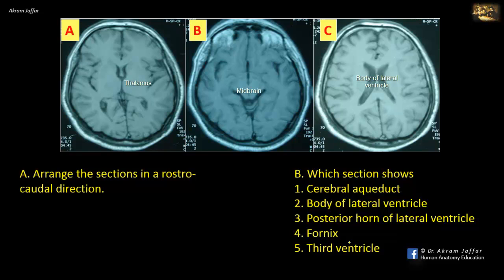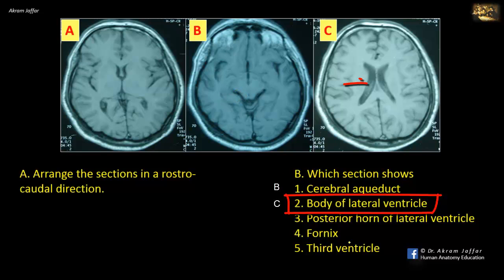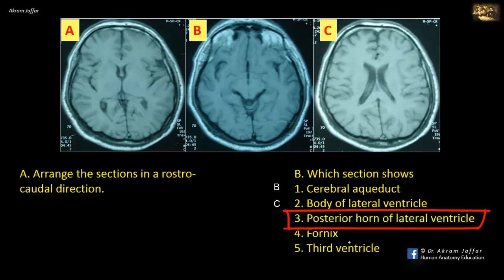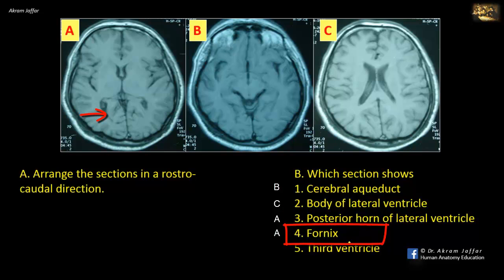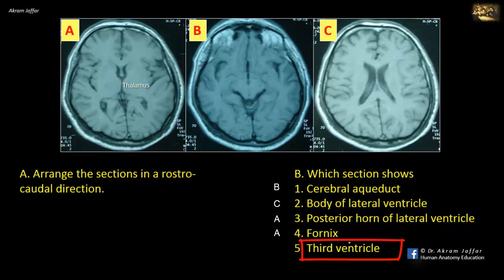Therefore, the sequence of the sections in a rostrocaudal direction is C-A-B. The cerebral aqueduct is shown in B, traversing the midbrain. Body of the lateral ventricle is shown in C, which also contains the choroid plexus. The posterior horn of the lateral ventricle is variably developed and is shown in A. The fornix (number 4) is also shown in A, just anterior to the interventricular foramen. Note that the posterior boundary of the interventricular foramen is the anterior end of the thalamus. The third ventricle (number 5) is also seen in section A, located in the midline between the two thalami, connected to the lateral ventricle via the interventricular foramen.